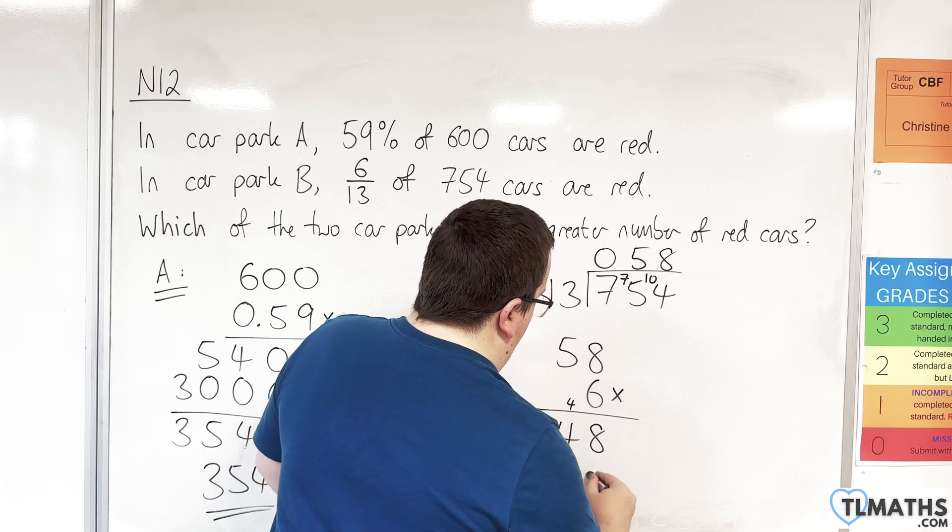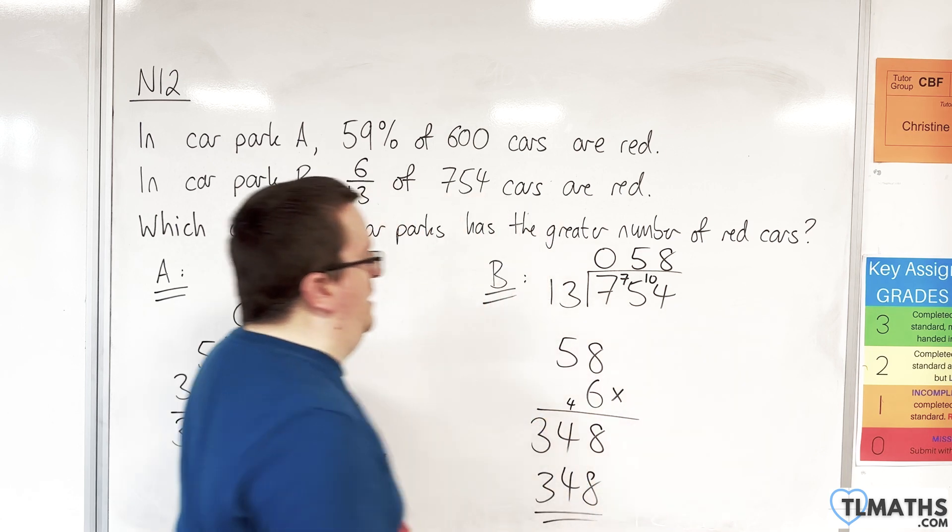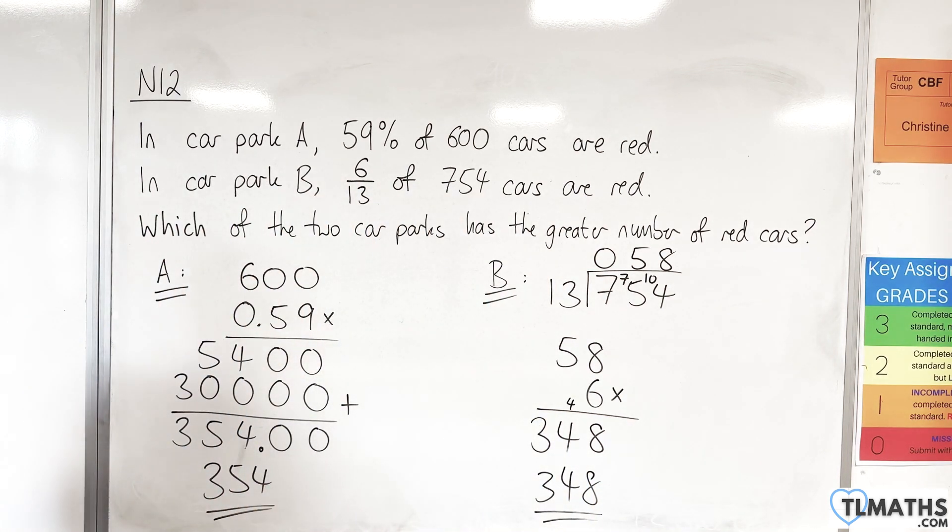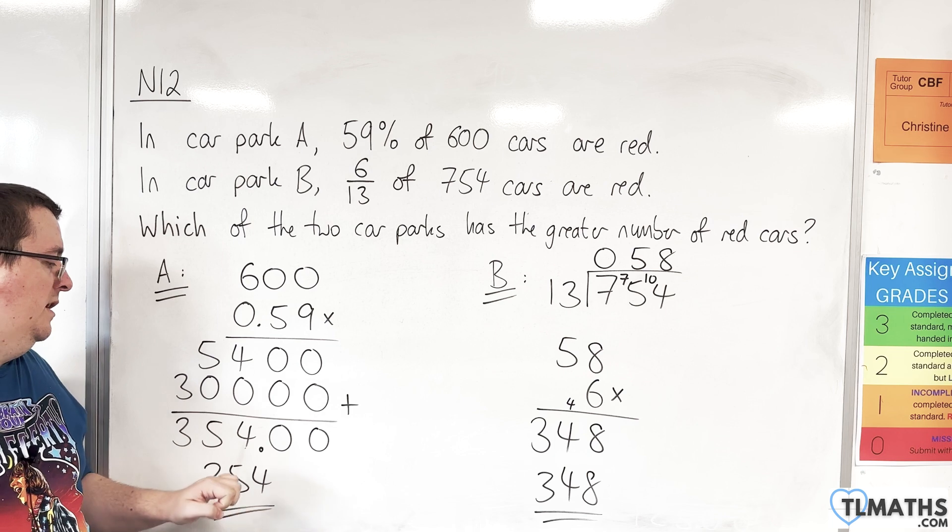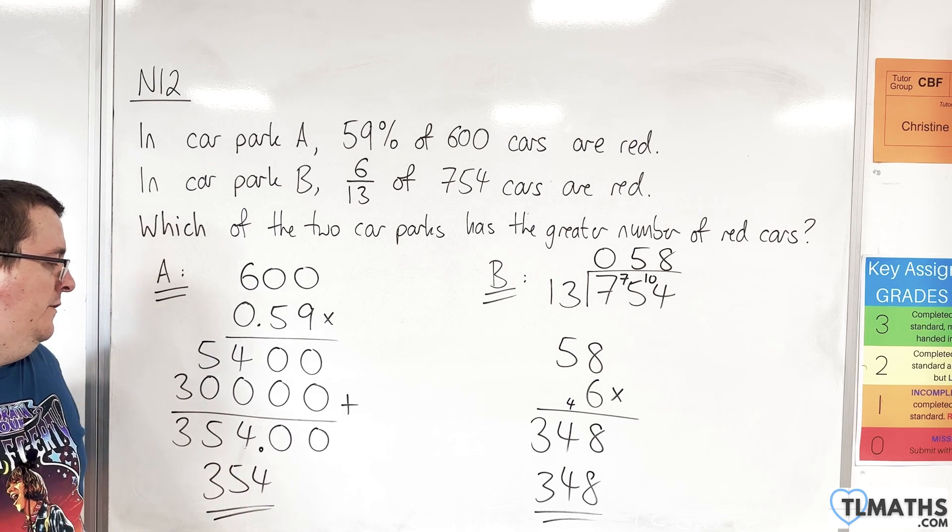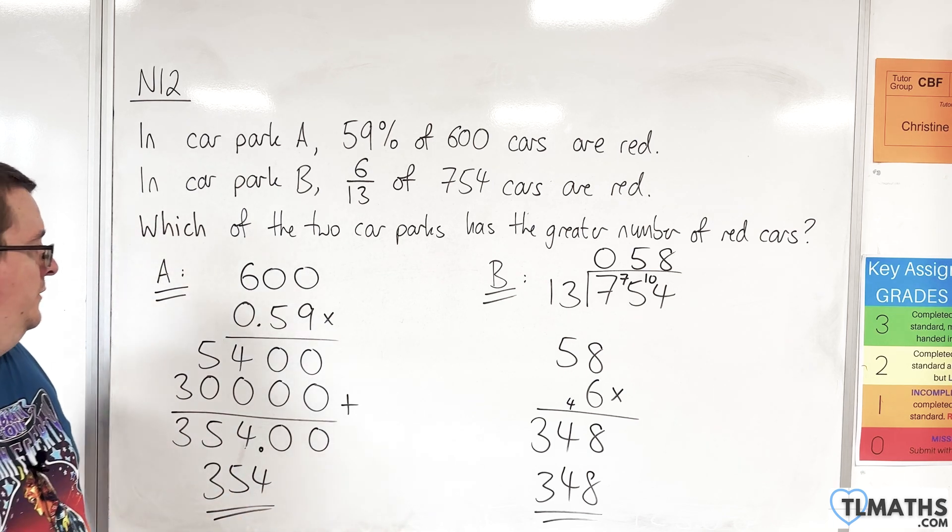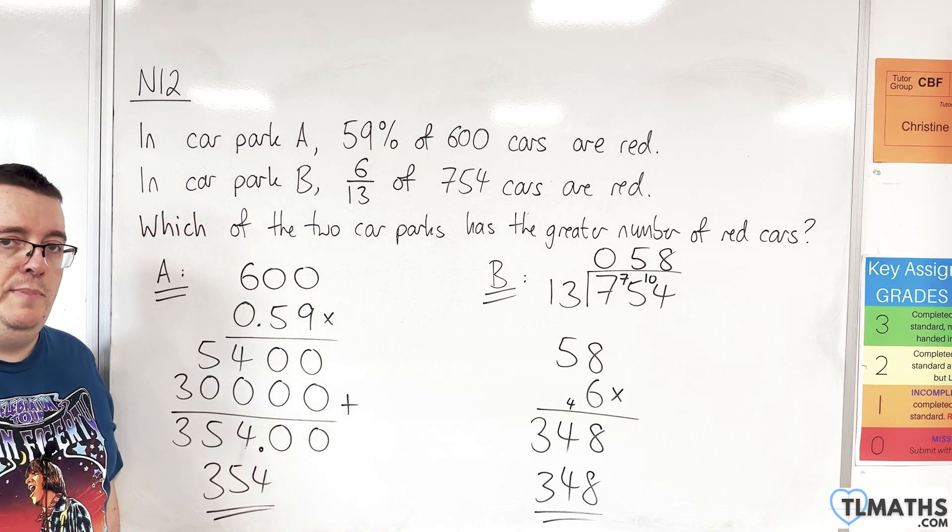We've got 348 red cars in car park B. That means there are more red cars in car park A. In fact, there are 6 more red cars in car park A than there are in car park B.